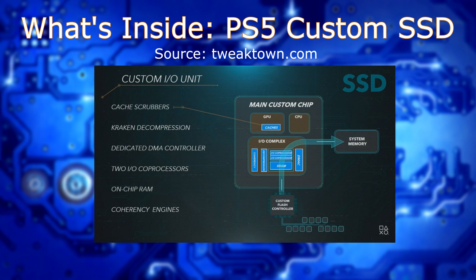The PS5 has 16 gigabytes of DDR6 unified RAM, and the bandwidth here is 448 gigabytes a second. This memory is directly tied with the SSD, and at this point you can immensely boost the RAM efficiency. The 12-channel controller hooked up to the 6 flash chips is tied with RAM on the die. So not only are you able to access and transfer things from the SSD to RAM extremely quickly, it's also cheaper as well, and you can consolidate the amount of RAM you actually need.